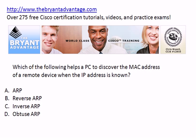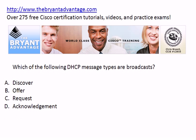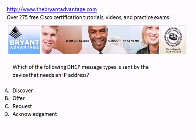Question eight: Which of these four helps a PC to discover the MAC address of a remote device when that remote device's IP address is already known? Question nine: Which of these DHCP message types are broadcasts? That's something we need to know because if we've got a router in between the two devices, we could have trouble with those broadcasts. Question ten: Which of these DHCP message types is sent by the device that is actually requesting the IP address?